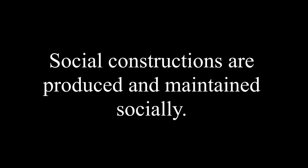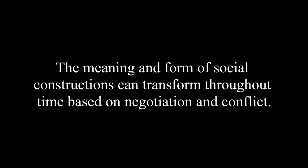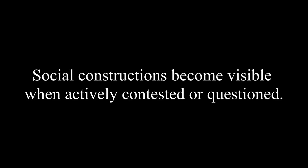Based upon these examples, we see several criteria for how social constructions are produced and maintained. First and foremost, social constructions are produced and maintained socially — this isn't an individual effort, but instead you need multiple people to buy into the legitimacy of the social construction. Second, social constructions are based on and maintained through trust — this includes not only other people, but also the institutions and societies that create and maintain them. Third, the meaning and form of social constructions can transform throughout time based on negotiation and conflict. Fourth, social constructions are often hidden — we usually go through our everyday lives not thinking about all of the socially constructed things and ideas making up our existence.